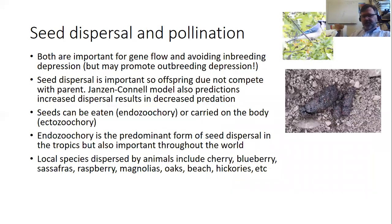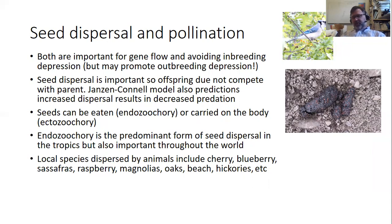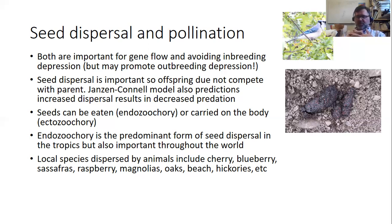The next ecosystem function is seed dispersal and pollination. The movement of seeds is the movement of future adults, and the movement of pollen is the movement of gametes. Both are important for gene flow and avoiding inbreeding depression — you're outcrossing. Pollination increases pollination rates by getting pollen from outside sources, so you're not inbreeding. When you move a seed out of the area where your siblings and parents are, you're more likely to pollinate with somebody that's not a close relative, and most of the time that's good.